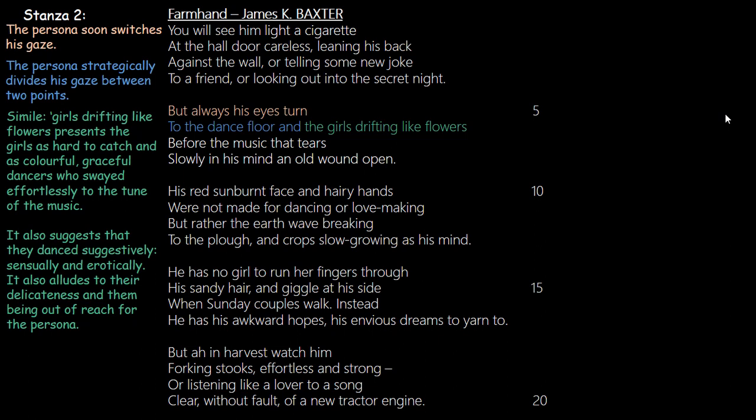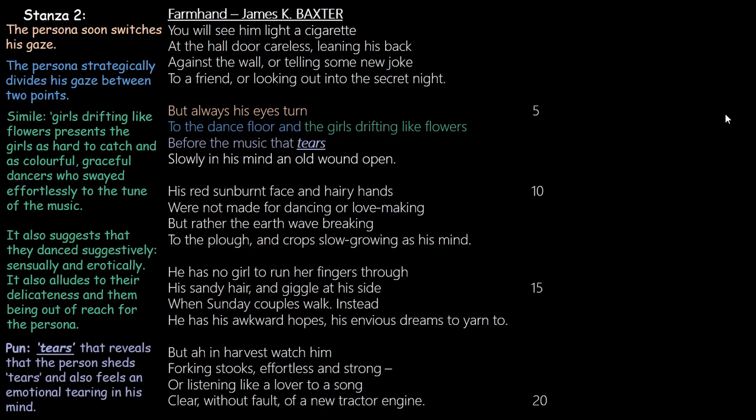'Drifting like flowers' suggests the girls were dancing suggestively and erotically, moving their bodies in a sensual way. It alludes to their delicateness, and it presents them as out of reach for the persona — he is not in their league. The word 'tears' is a pun: first it means the persona sheds tears before the music; second, the music literally tears something apart in his mind, making him emotional and hurt.